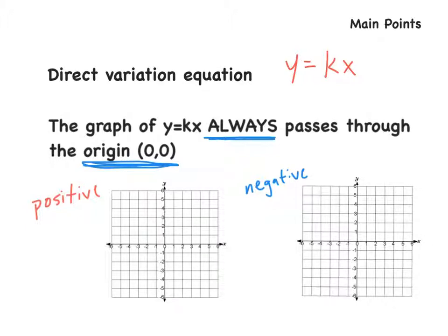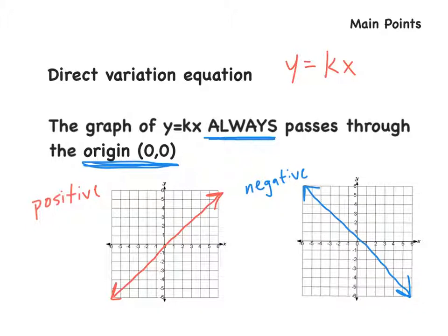Now we have two graphs at the bottom. If we have a line that's sloping upwards from left to right, that is a positive direct variation. If it's going from left to right and going downwards, then it is a negative direct variation.